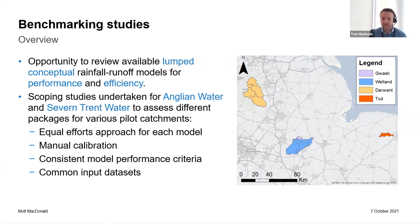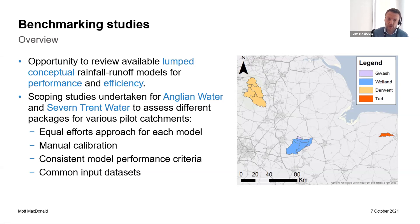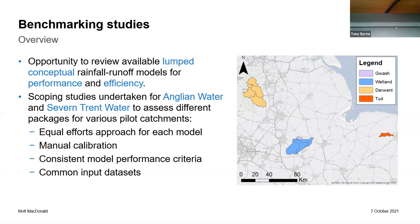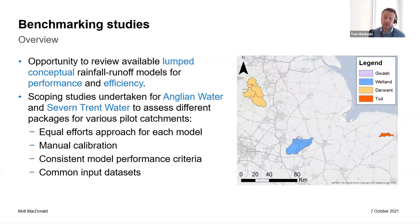For Severn Trent we looked at five models in respect of the Derwent catchment. It's really important to say here that we had no preconceptions about which model would be adopted — we were very open to adopting any of the seven models we looked at. Some key things about the way we approached it: we very much did an equal-efforts approach on calibrating and validating each model. We did adopt manual calibration, partly because one of the models we were looking at didn't have the ability to automatically calibrate for the performance metrics we were particularly interested in. The key thing was to use consistent model performance criteria to assess their relative performance and common input data sets for all models so that the comparisons are fair.